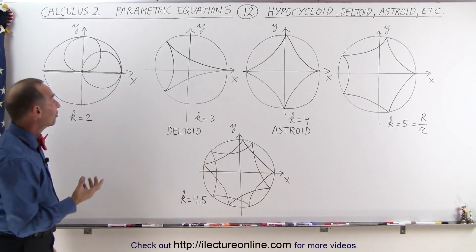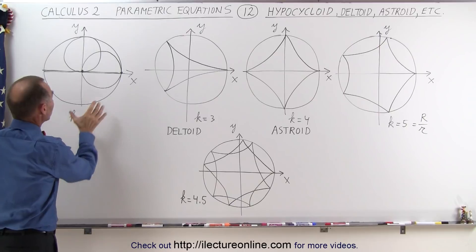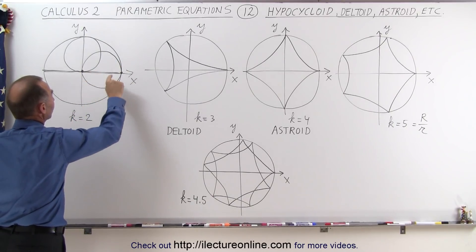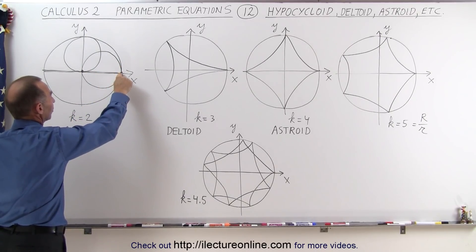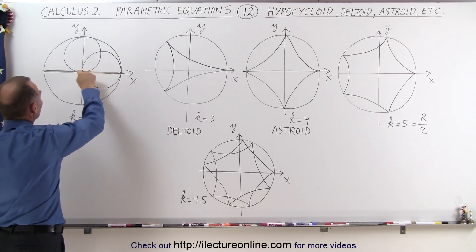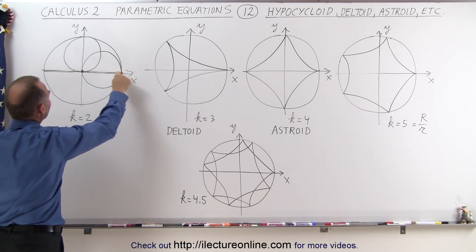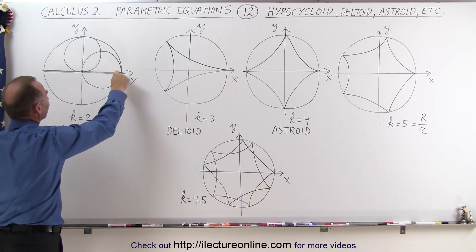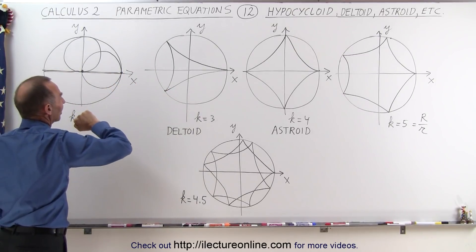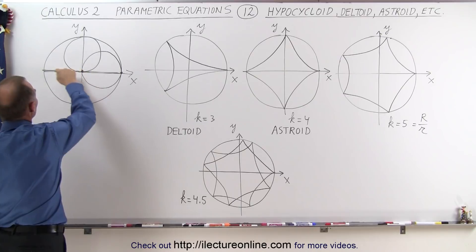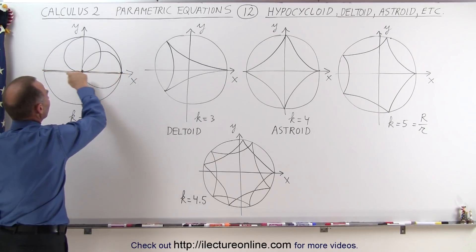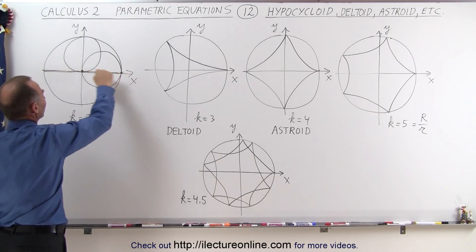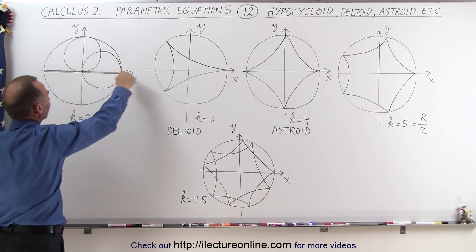What I think is really interesting is when k equals 2, in other words, when the radius of the small circle is half the radius of the big circle, the point on the edge of the small circle actually makes a straight line across, back and forth, instead of something that looks like that. So we go directly across over here, we come directly back, and that edge of the small circle simply goes back and forth along the x-axis.